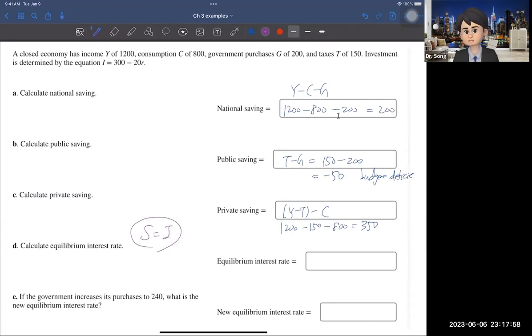And in a closed economy model, saving equals investment. Why is that? You cannot invest more than your saving because you cannot borrow from outside the country. So that being said, the saving has to be the same as investment. Or you can derive this relationship.